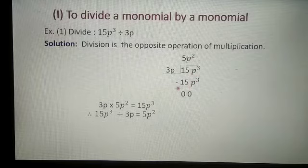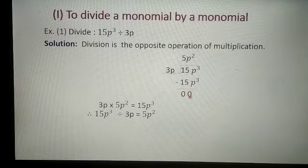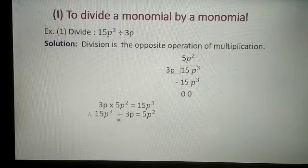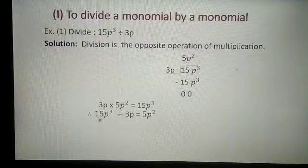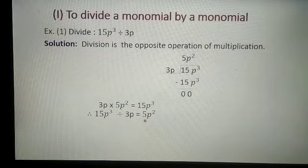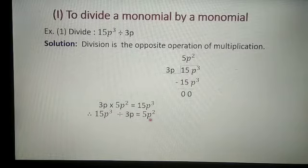As in division we will subtract, so minus 15p cube. The remainder we will get is 0. So the quotient is 5p square and remainder is 0. Therefore, 15p cube divided by 3p gives 5p square. This is the first example.